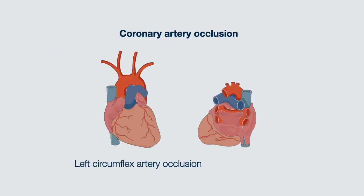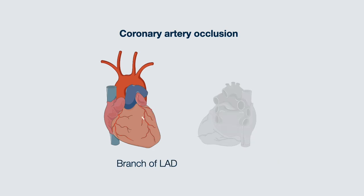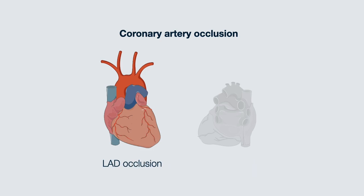If the left circumflex artery is occluded, this causes a lateral infarct. If a branch of the left anterior descending artery is completely occluded, there will be a septal infarct. If there is proximal occlusion of the left anterior descending artery, there will be an anteroseptal infarct.